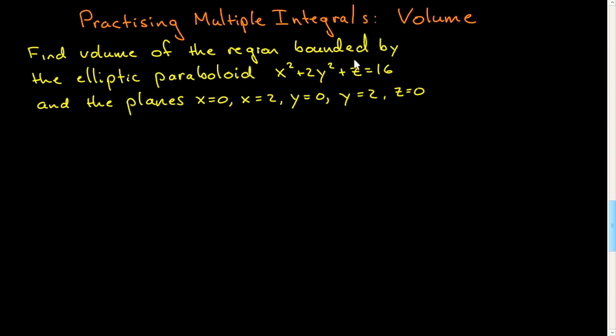Here's a typical kind of question. You're asked to find the volume of the region bounded by certain geometrical constraints, namely an elliptic paraboloid by this equation, and then a set of planes: x equals naught, x equals two, y equals naught, y equals two, and z equals naught.